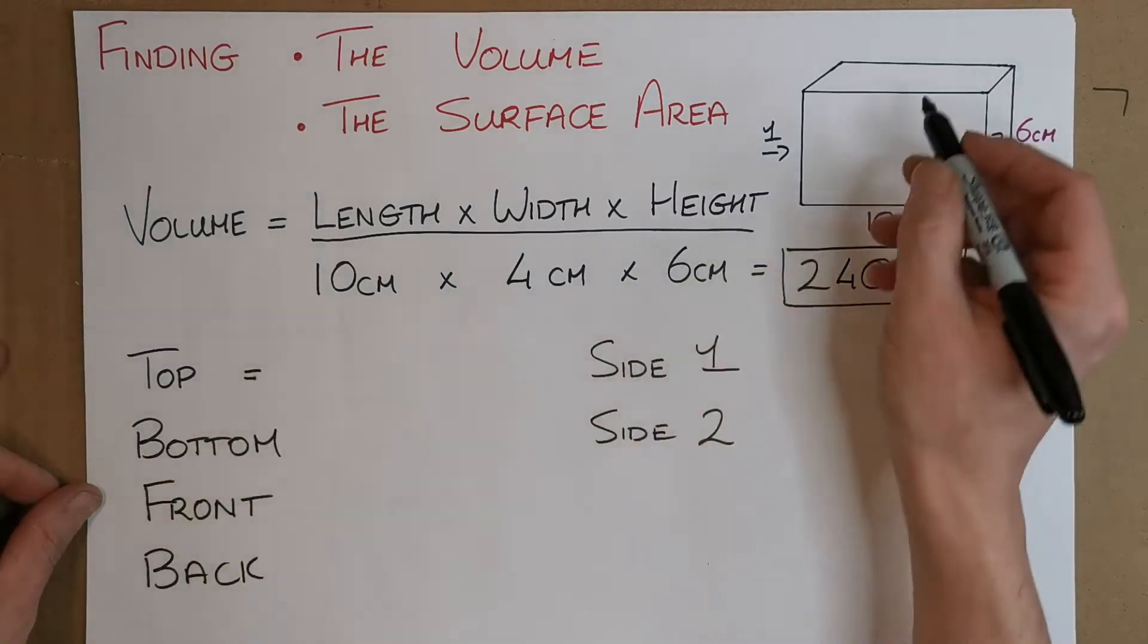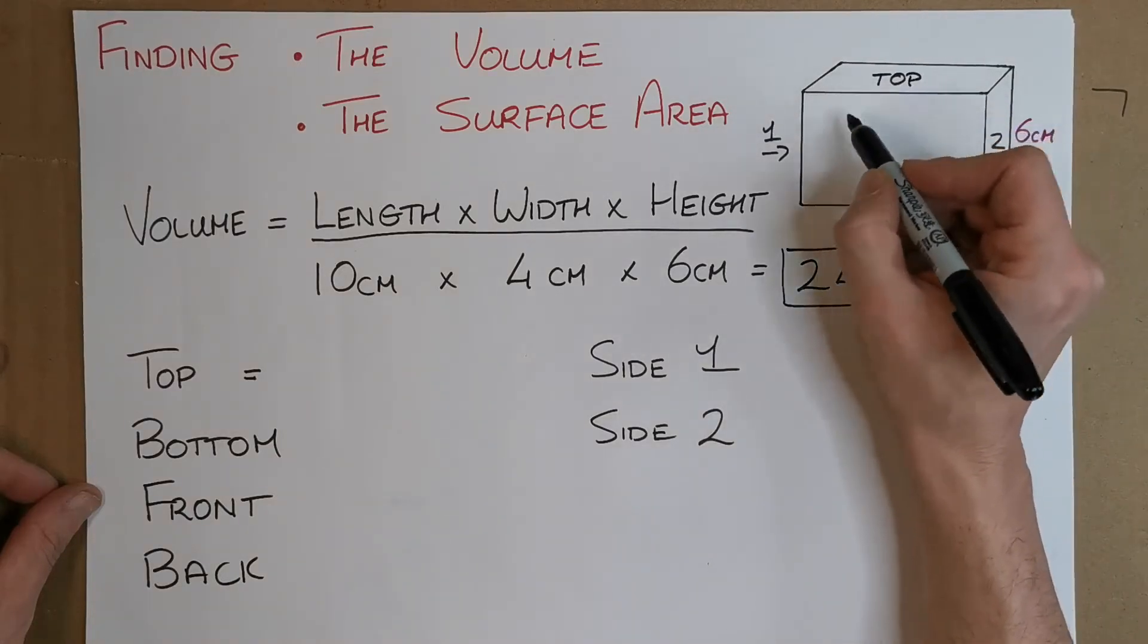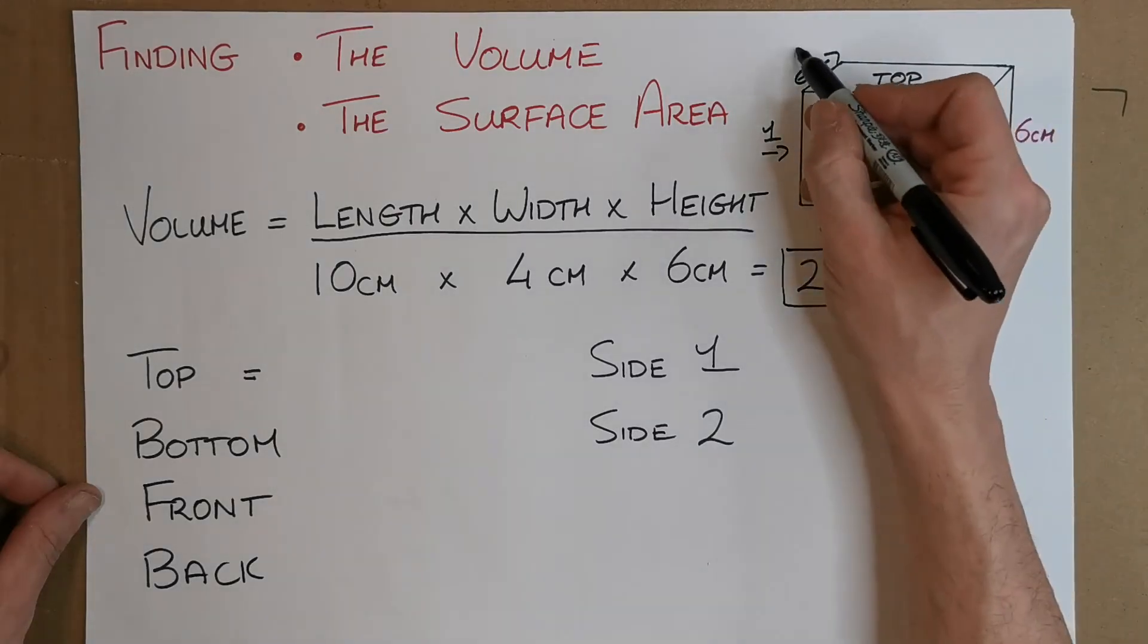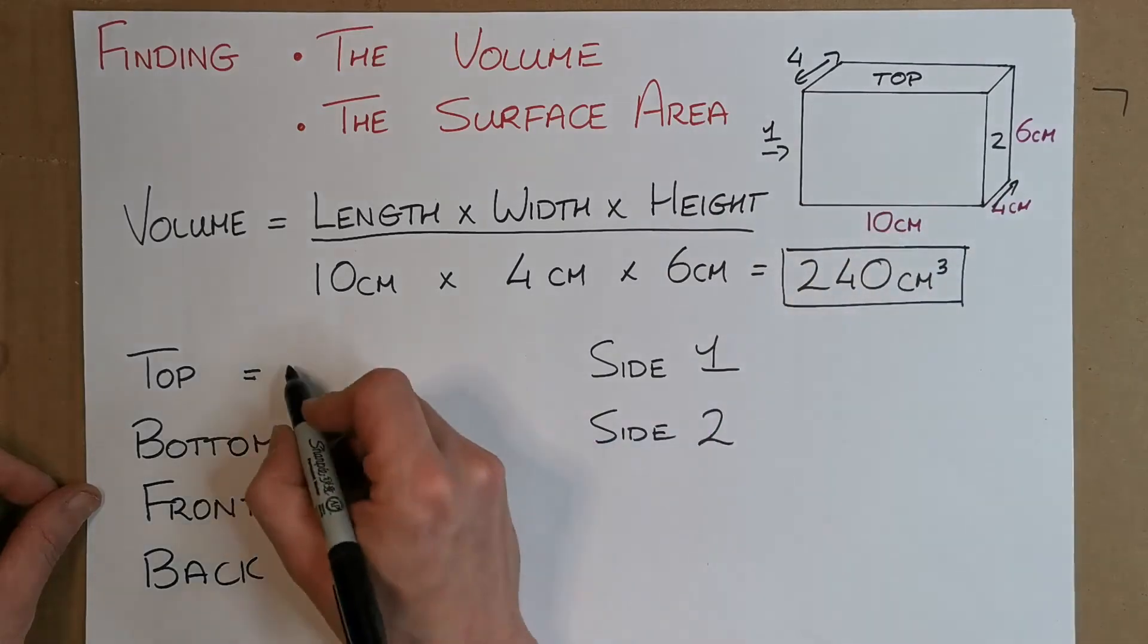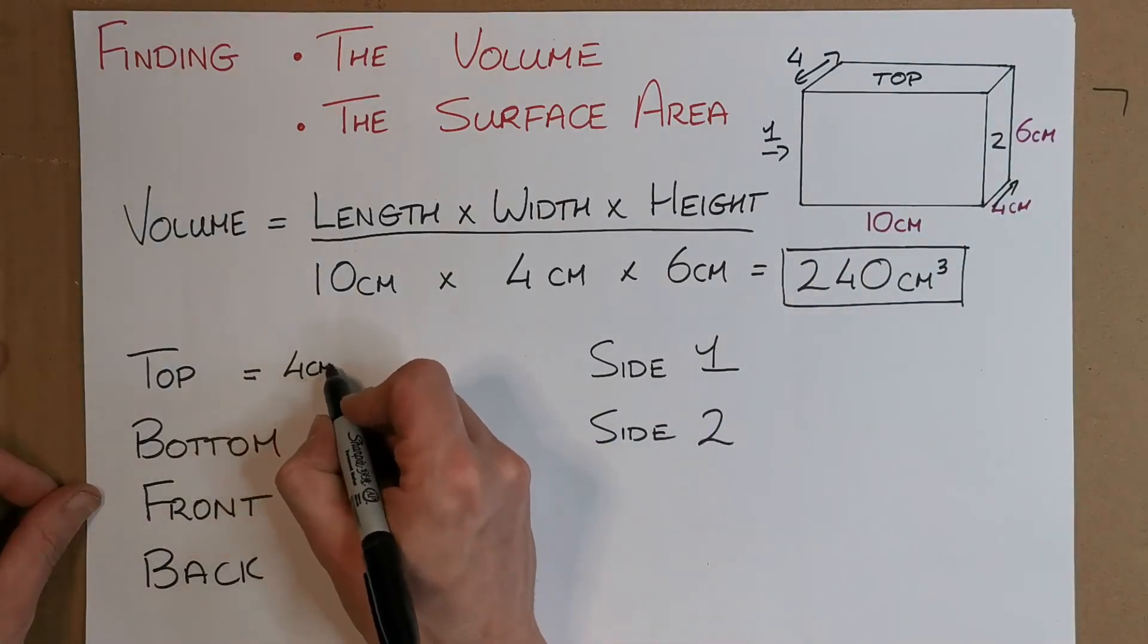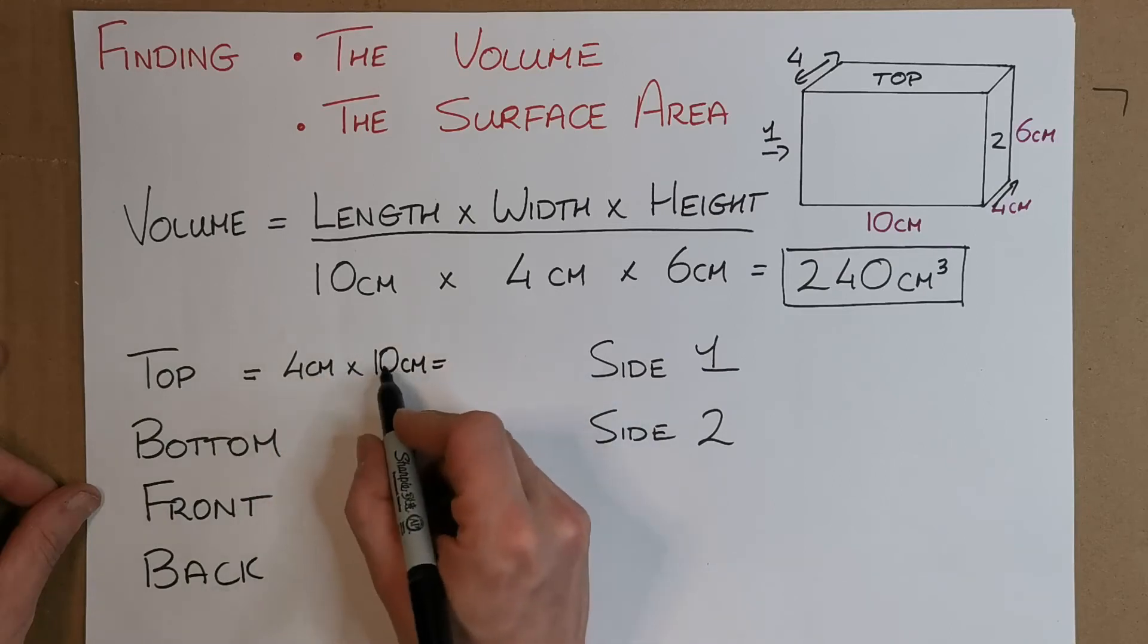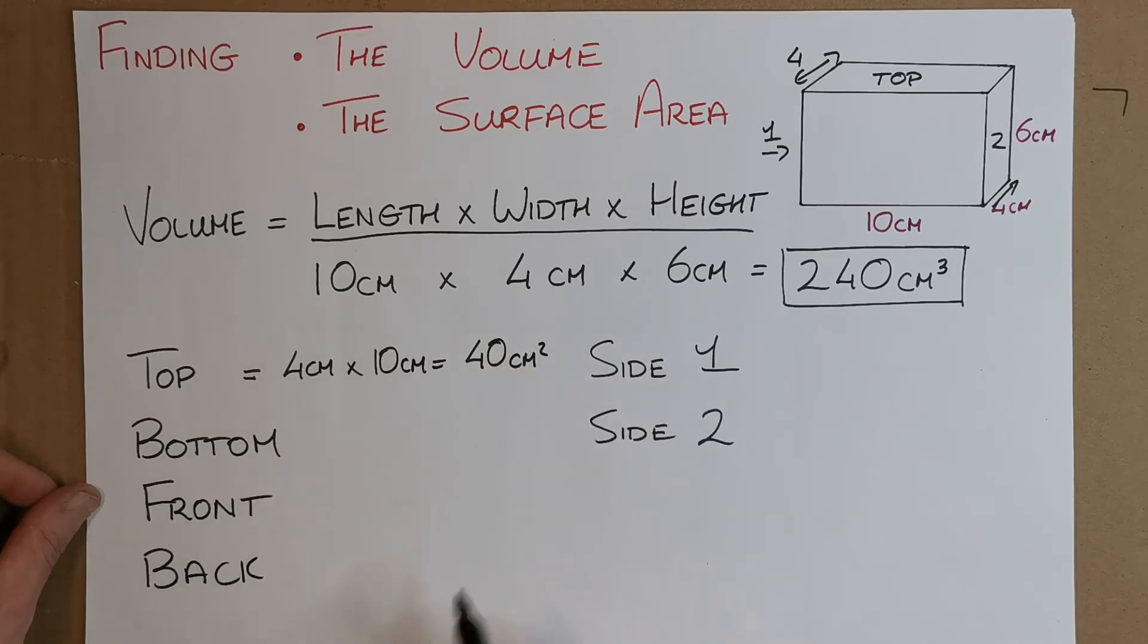So let's look at the top. The top is this stuff here. So what's this length here? Well, it's the same as this length down here, which is four centimeters. What's the length? It's the same as this length down here, which is 10 centimeters. So that's four centimeters by 10 centimeters. Two measurements: four by 10 is 40, so that's 40 centimeters squared.